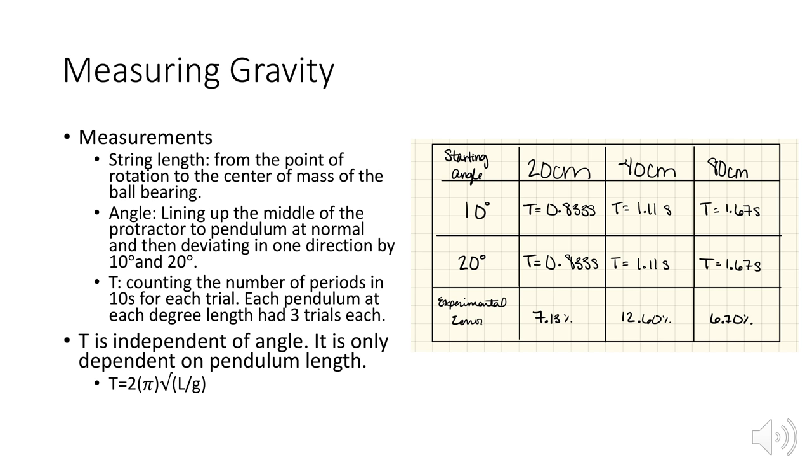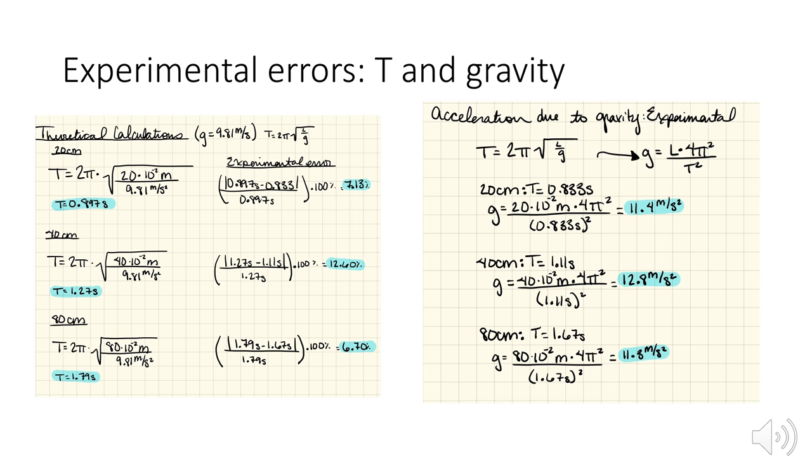We did take measurements at 10 and 20 degrees. You can see that data is identical. You can also see that our experimental error ranged from 6.7 to 12.6. The only thing that can really affect this is the length of the pendulum. So it was error in how we were measuring that.